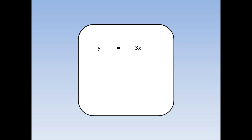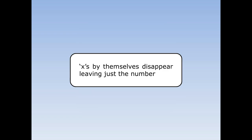Here we have y equals 3x. Now I don't have any power, so I need to remember that x and x to the power of 1 are exactly the same. So now I can differentiate. The 1 drops down the front and multiplies, and 1 take away 1 is 0. I need to remember that anything to the power of 0 equals 1. So the gradient dy by dx is 1 times 3, which is 3. And in general, x's by themselves disappear, leaving just a number.